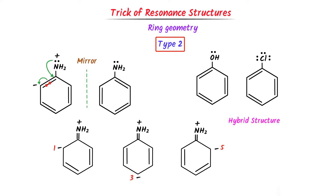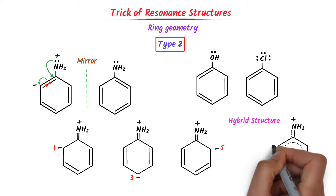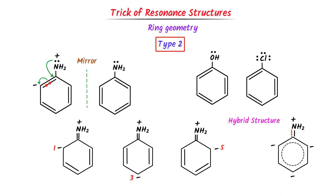The hybrid structure of aniline is drawn by placing a dotted circle inside the benzene ring and drawing a dotted line to represent the double bond. Hence, using this same method, we can draw resonance structures of these remaining molecules. Remember that we can only use these tricks at a basic level, which covers 90% of courses. We cannot use these tricks at a higher or advanced level. I hope that you have learned the complete concept of resonance structures.